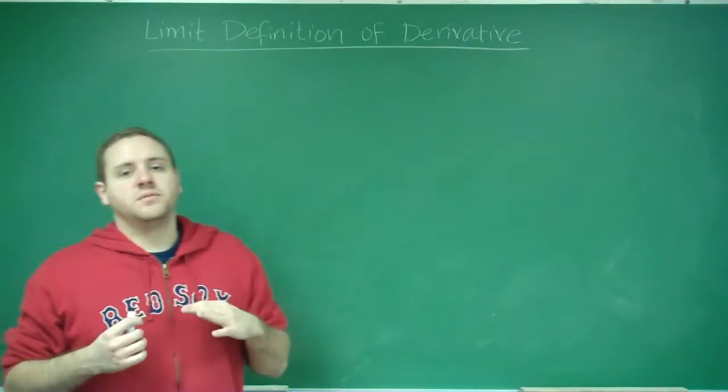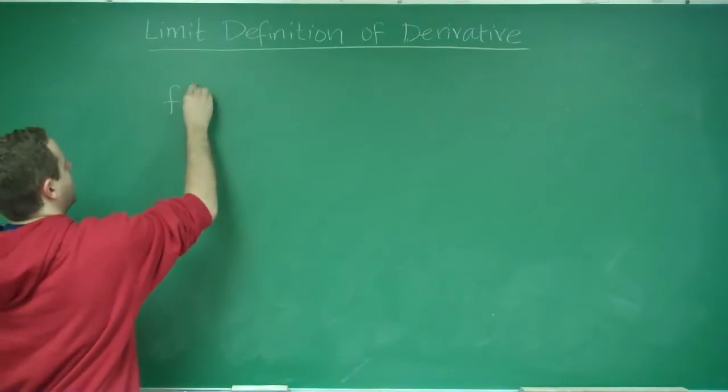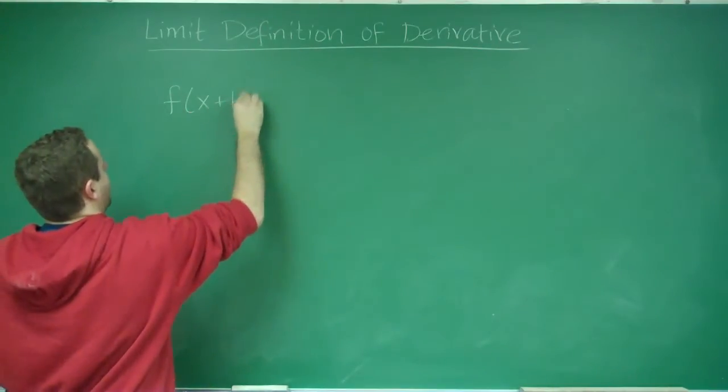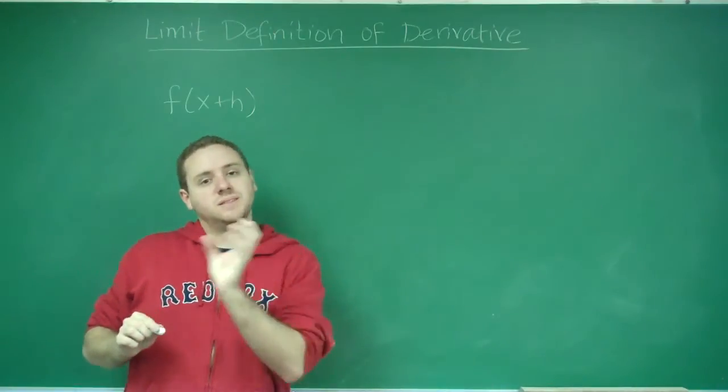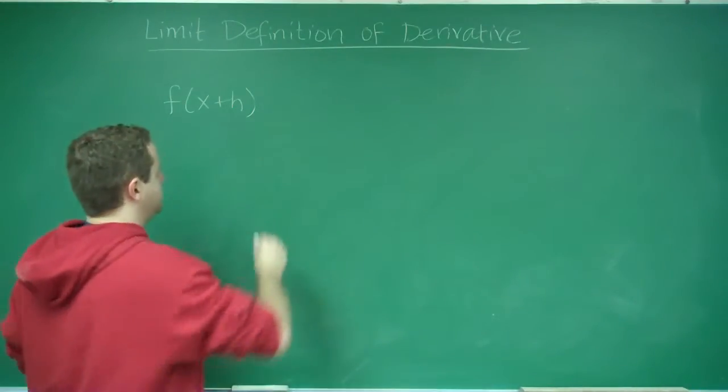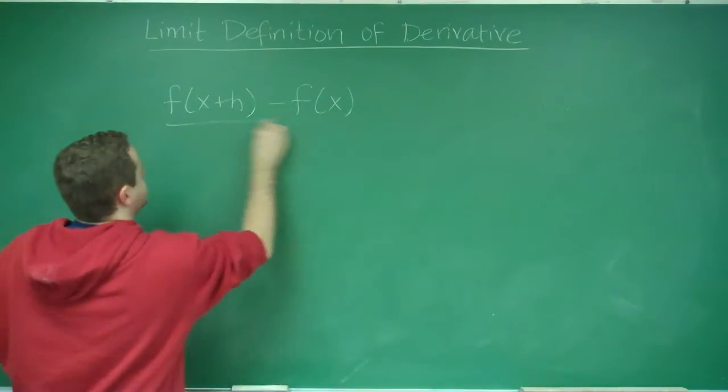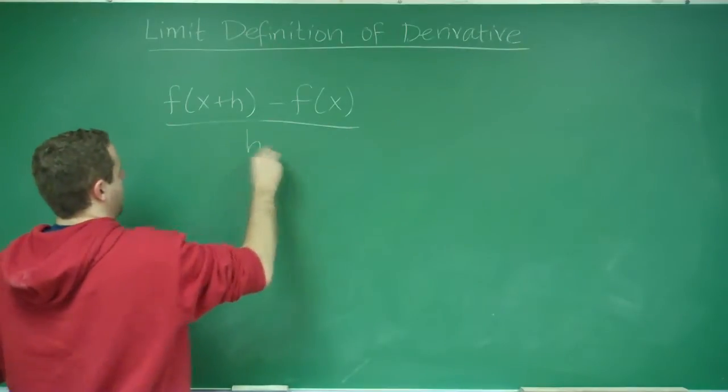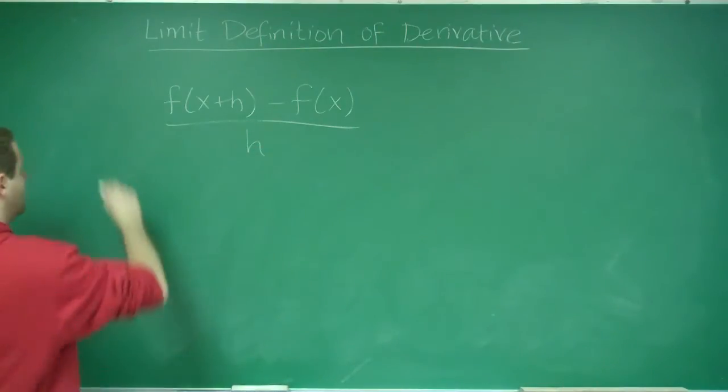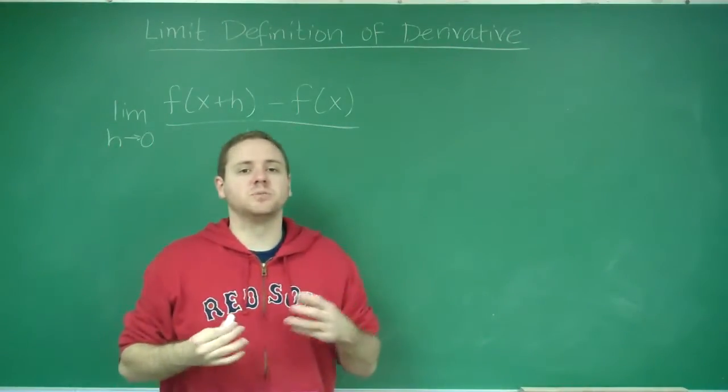The limit definition of the derivative can be presented in two ways. The most common way is that you take the function and evaluate it at some x plus h, where h is a small constant, minus f of x, over x plus h minus x, which ends up being just h. And you take the limit as h approaches zero.